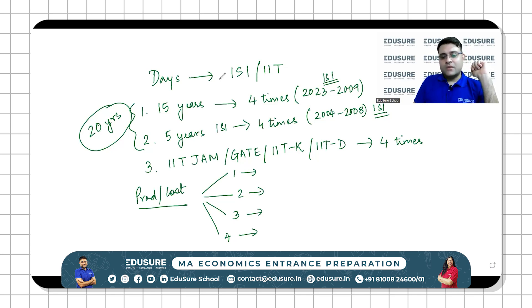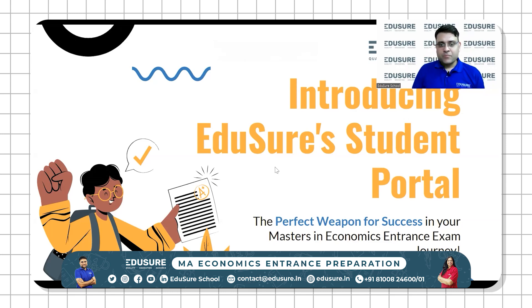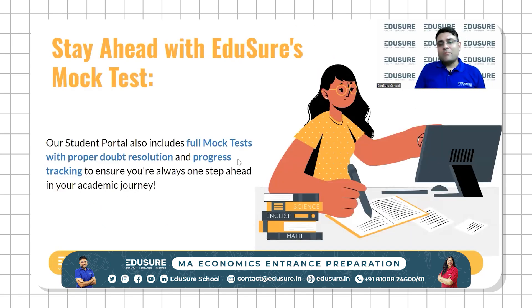In order for you to enable yourself to do this entire thing, we have something called a student portal with us at EduSure. This is your sword in this war, this is your weapon. The war is tackling and conquering ISI IIT. It's the perfect weapon for success in your masters in economics journey. There are more than 4,000 videos, concepts, solutions. Each and every solution of each and every paper is available on the student portal.